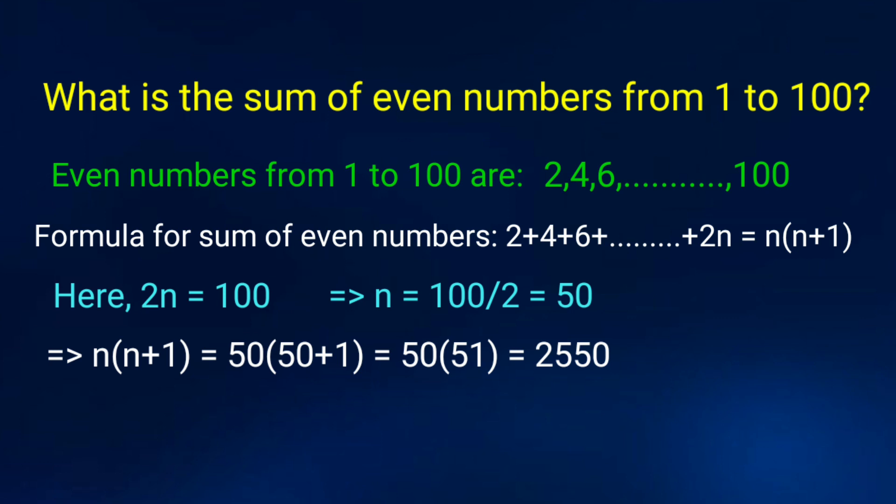So n into n plus 1 is equal to 50 into 50 plus 1, that is equal to 50 into 51, that is equal to 2550.